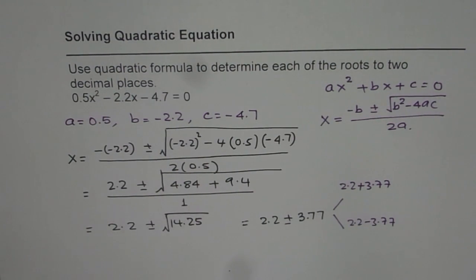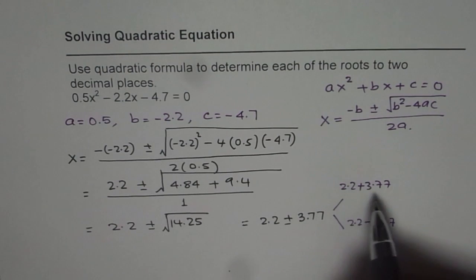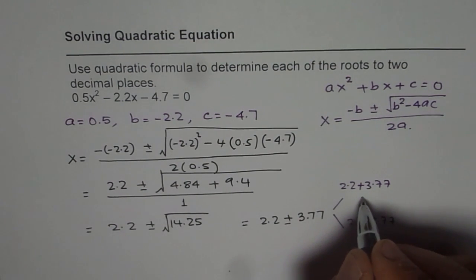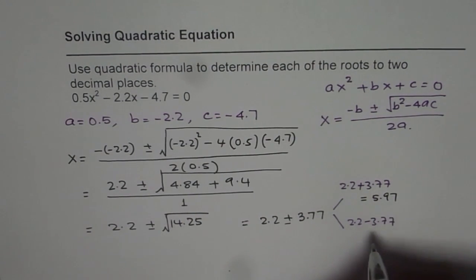So these are the two answers. You can use your calculator. This one equals 5.97 and this one is equal to -1.57.